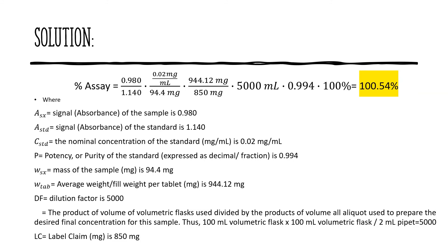Now that everything is ready, we can compute for the assay. Assay equals 0.980 times 0.02 milligrams per ml times 944.12 milligrams, multiplied by 5,000 ml, times 0.994, times 100, divided by 1.140 times 94.4 milligrams times 850 milligrams. Thus, the assay value is 100.54%.